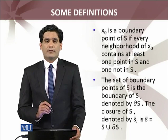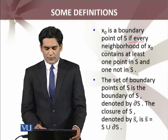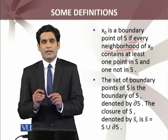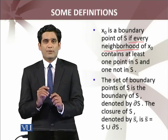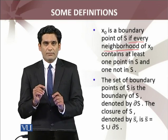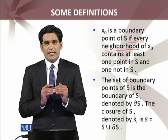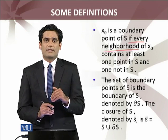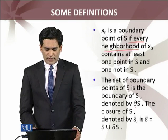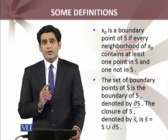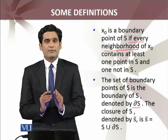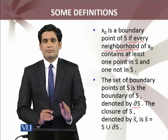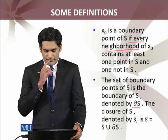X₀ is a boundary point of S if every neighborhood of X₀ contains some points of S as well as some points other than those in S. Boundary of a set S को हम ∂S से denote करते हैं. Closure of a set is defined as the union of the set itself and its boundary points — that is, S union ∂S.